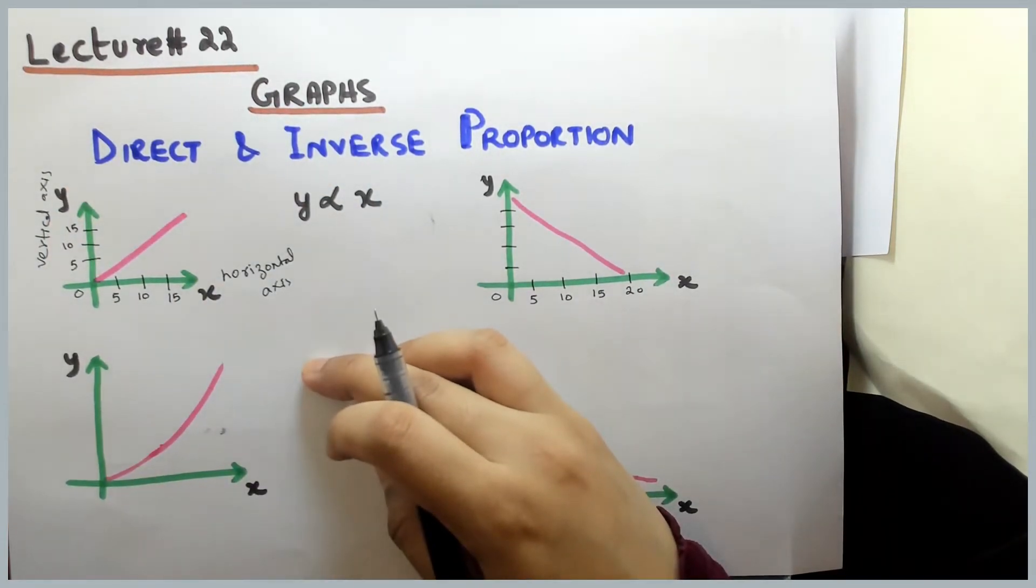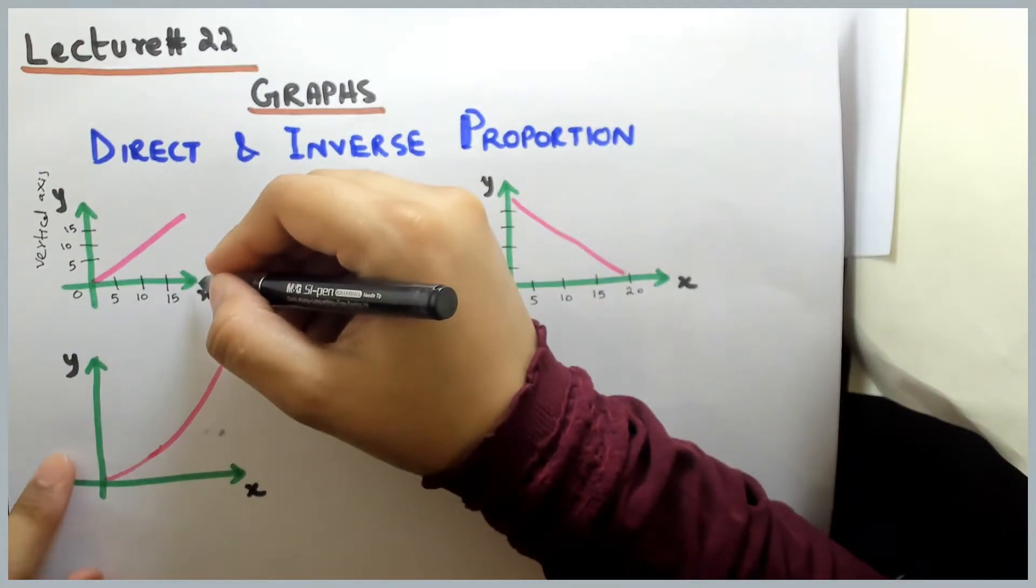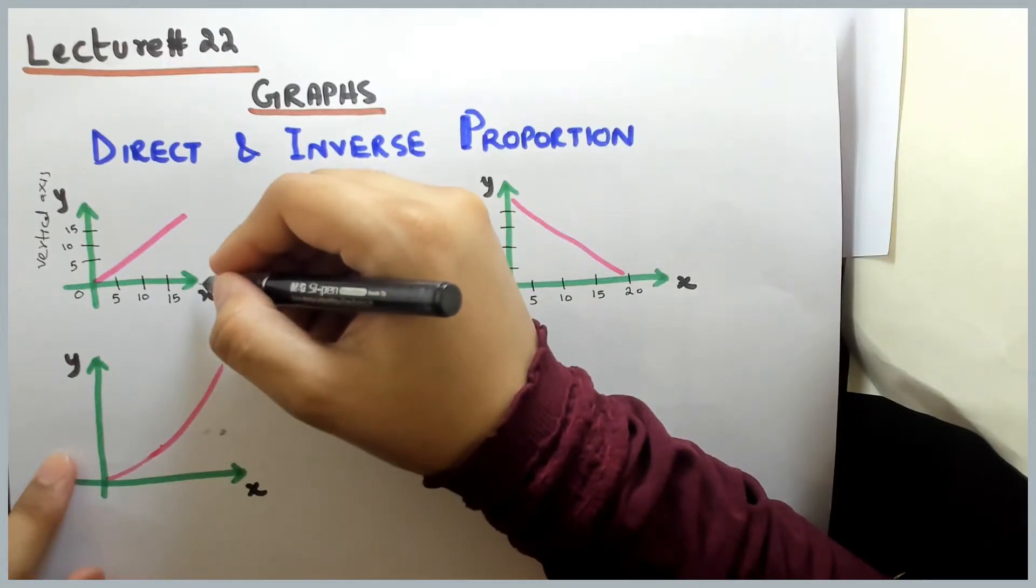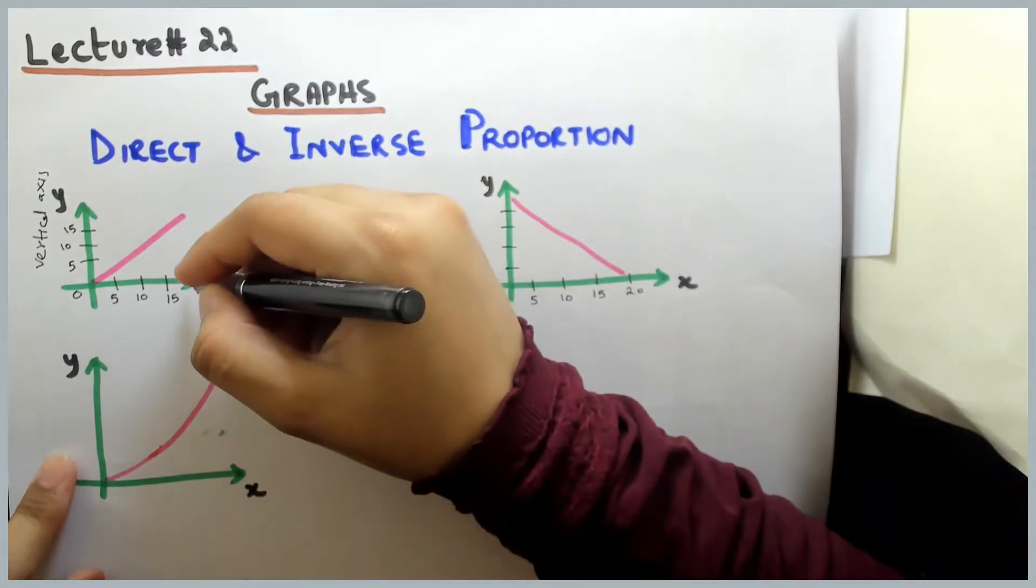You should know that in horizontal axis, you always have independent variable. That's all, in the horizontal axis.